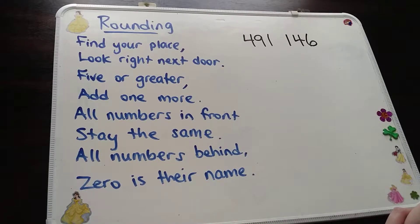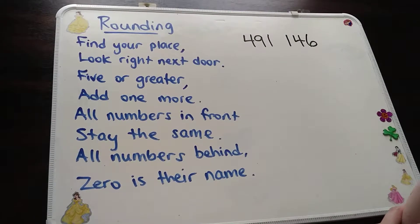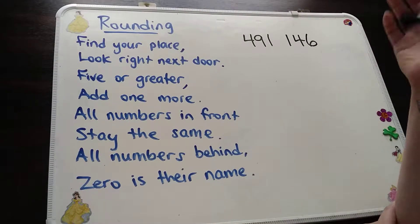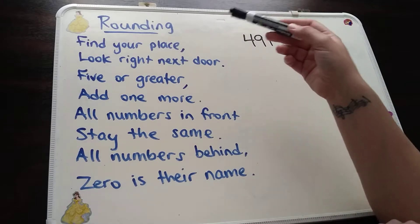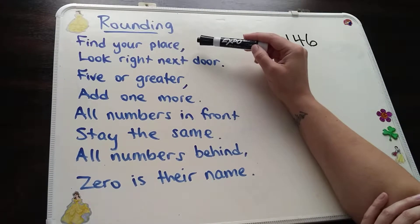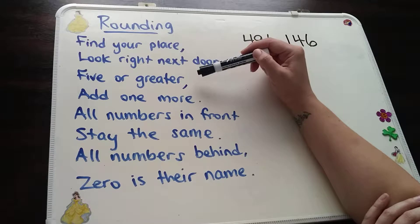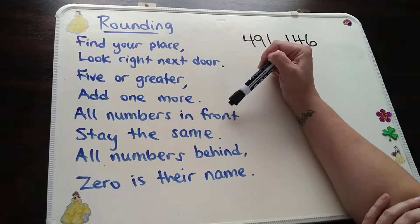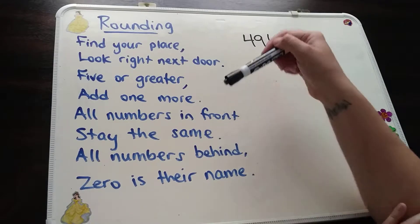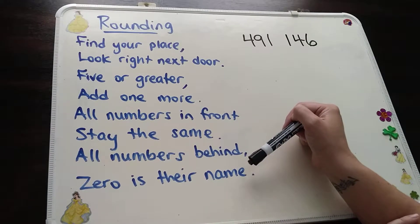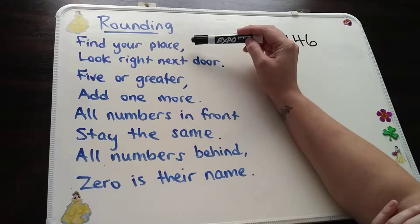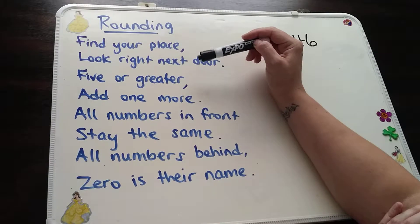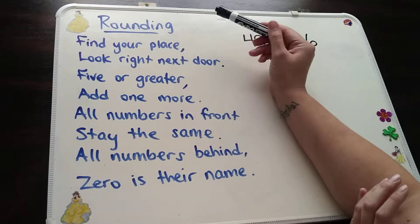If you memorize it, especially when you're learning how to do rounding, it helps a lot. And then eventually you won't even need it anymore because you'll know what to do. So the rounding poem that really helps me is: find your place, look right next door, five or greater, add one more. All numbers in front stay the same. All numbers behind, zero is their name.